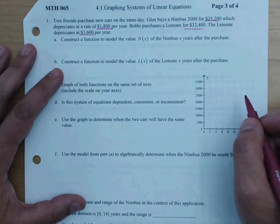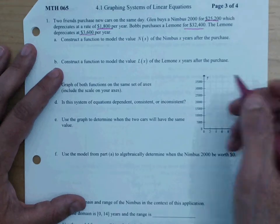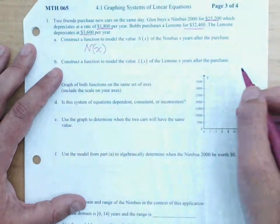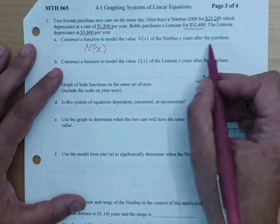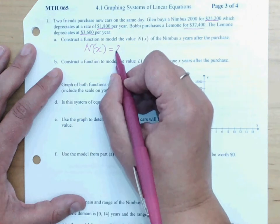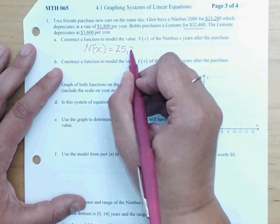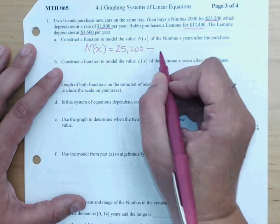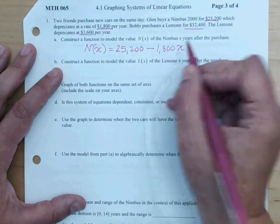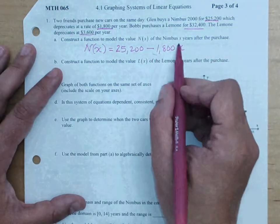Construct a function to model the value N(x), this is just function notation, of the Nimbus x years after purchase. So you can think about the y-intercept is where we purchased it from, $25,200. It's depreciating, so we're going to take away $1,800 every year. So that's our slope, it's a negative slope.